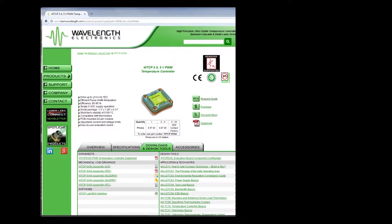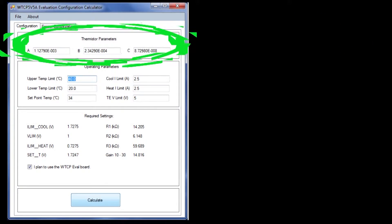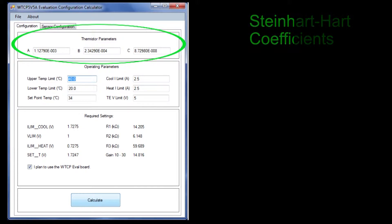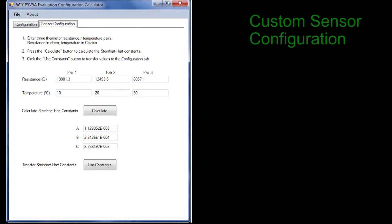First, download the WTCP eval component configurator software from our website and run it. Under thermistor parameters are the ABC coefficients of the thermistor you will use to sense the temperature of your load. These coefficients come from the Steinhart-Hart equation and default to typical numbers for a thermistor that reads 10k ohm at 25 degrees C. If you are using something other than a 10k ohm thermistor, go to the Sensor Configuration tab and follow the on-screen instructions to determine your thermistor coefficients.